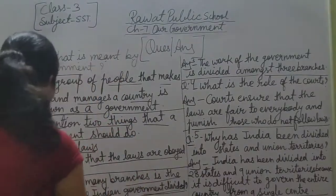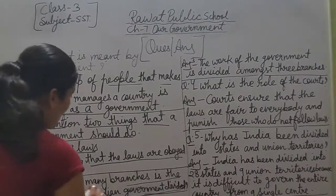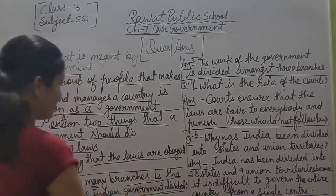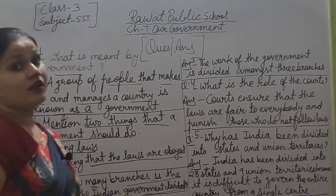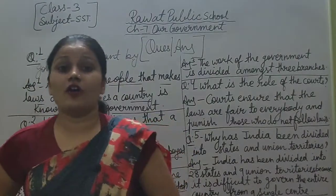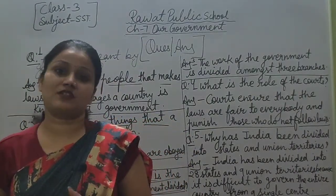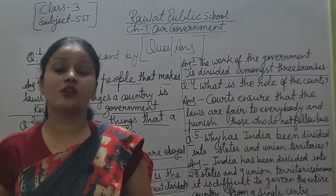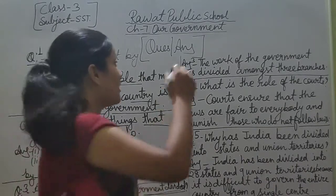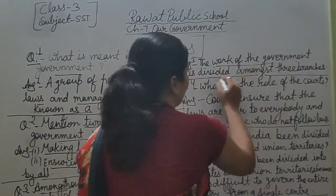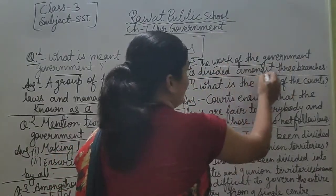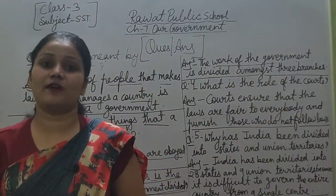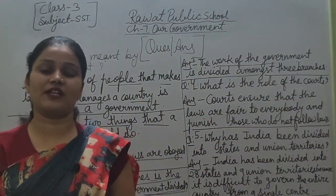Now question number 3: amongst how many branches is the work of the Indian government divided? The answer is: the work of the government is divided among three branches. Indian government's work is divided into three branches.